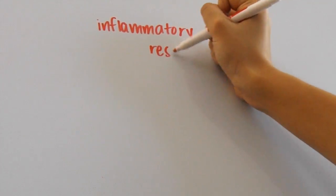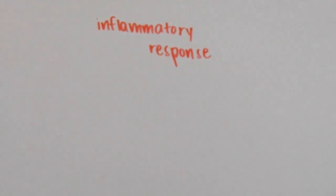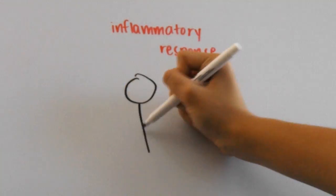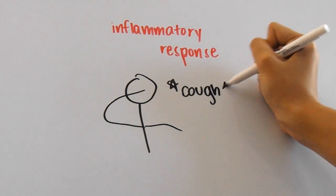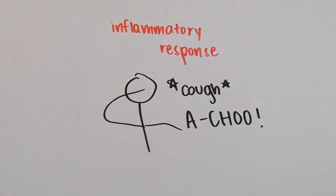In addition to phagocytes and monocytes, the second line of defense also includes the inflammatory response, which is characterized by coughing, swelling, redness, and can even be a part of allergies.